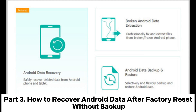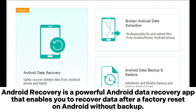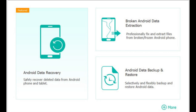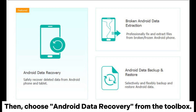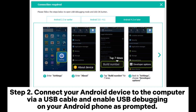Part 3: How to recover Android data after factory reset without backup. Android Recovery is a powerful Android data recovery app that enables you to recover data after a factory reset without a backup. Step 1: Download, install, and launch Android Recovery on your computer, then choose 'Android Data Recovery' from the toolbox.